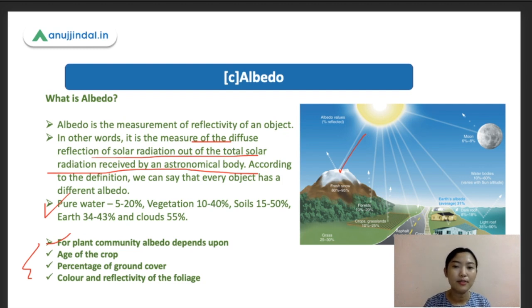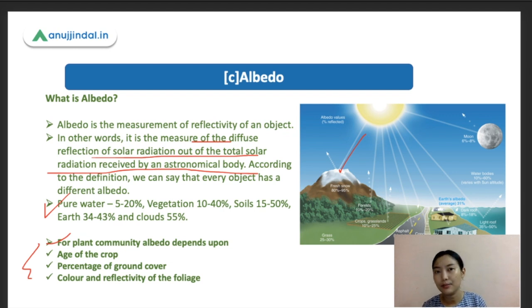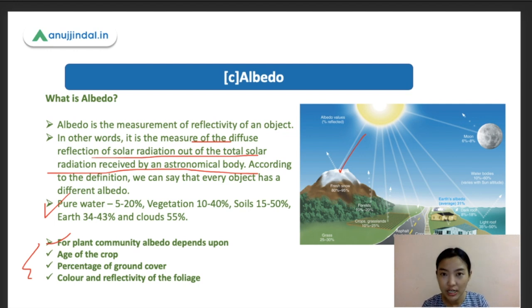The albedo effect has a significant impact on climate. A lower albedo means more radiation from the sun is absorbed by the planet, so temperature rises. A higher albedo means the earth is more reflective, more radiation is returned to space, and the planet cools. Therefore, more vegetation ground cover means a cooler earth.